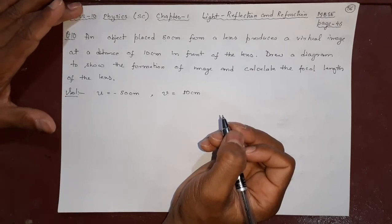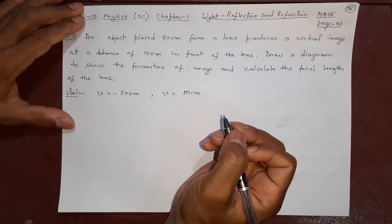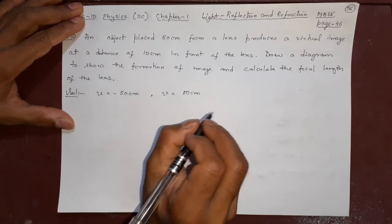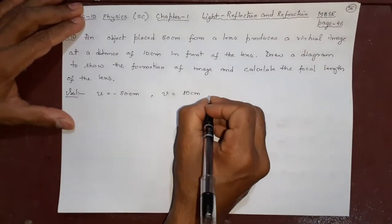In which type of lens is this image formed in front of the lens? It can be concave also, it can be convex. Draw a diagram to show the formation of the image and calculate the focal length of the lens.